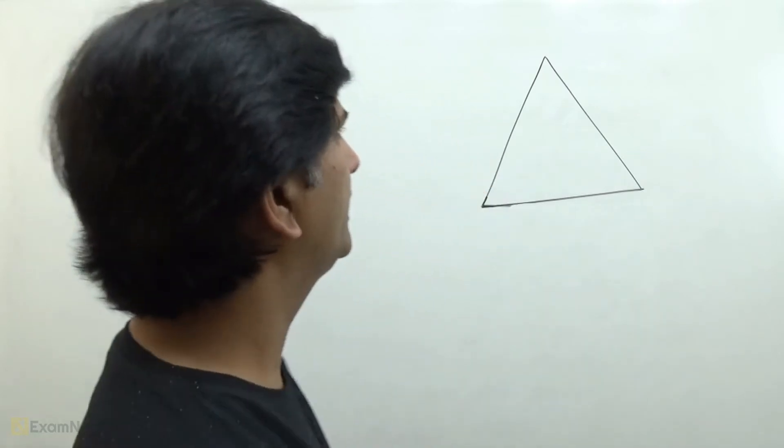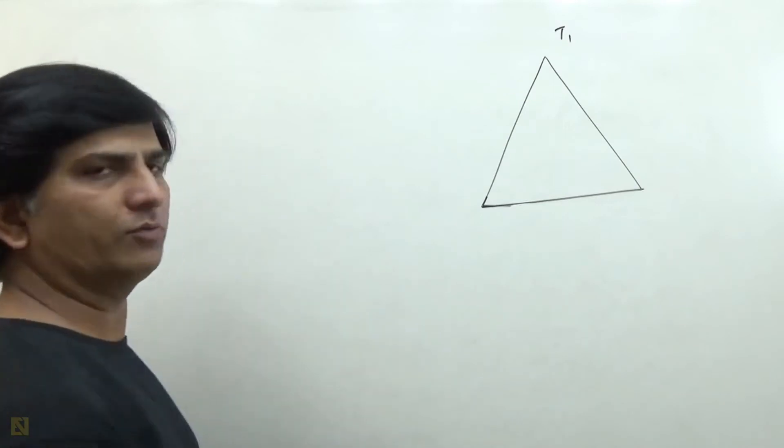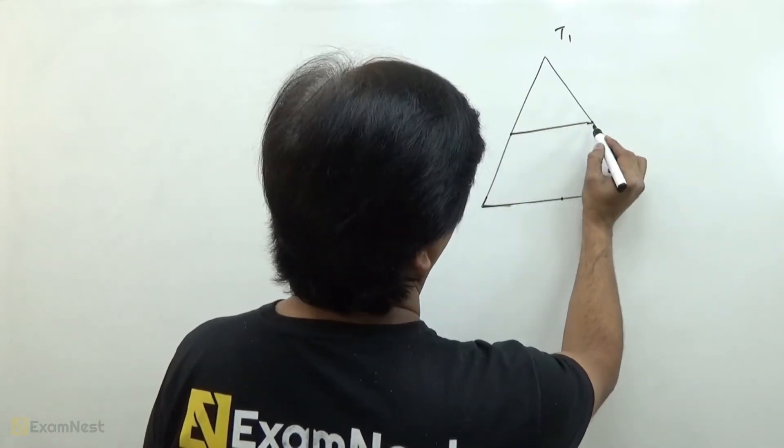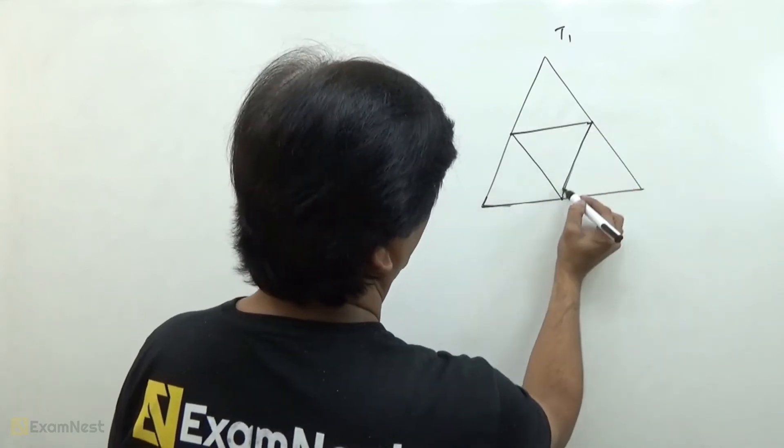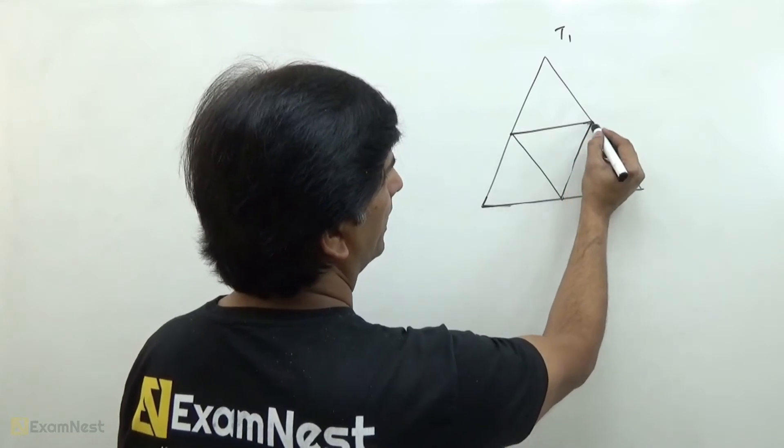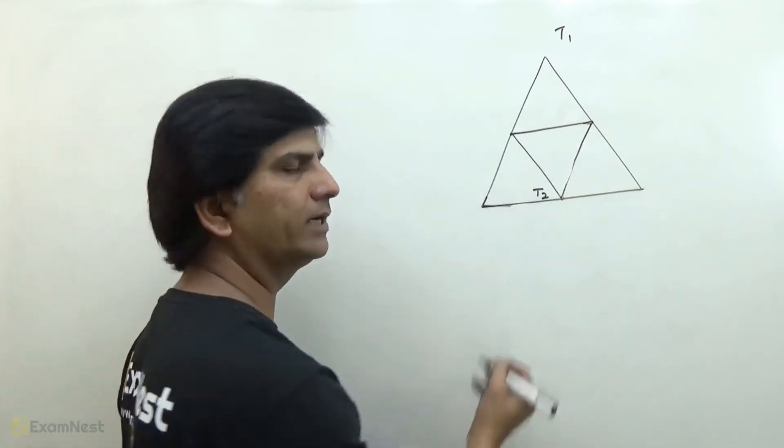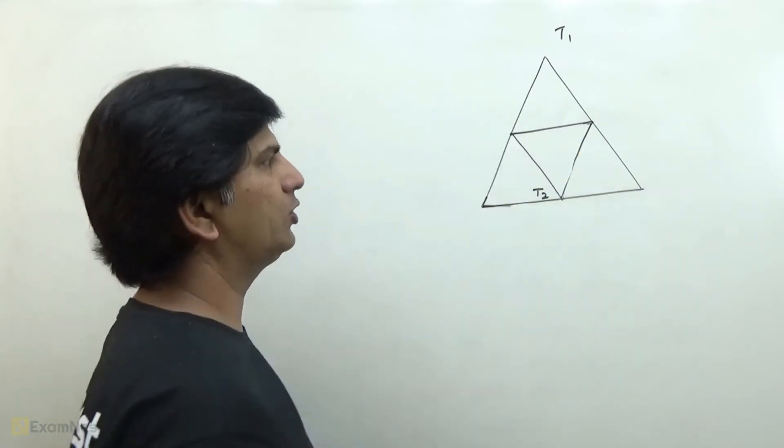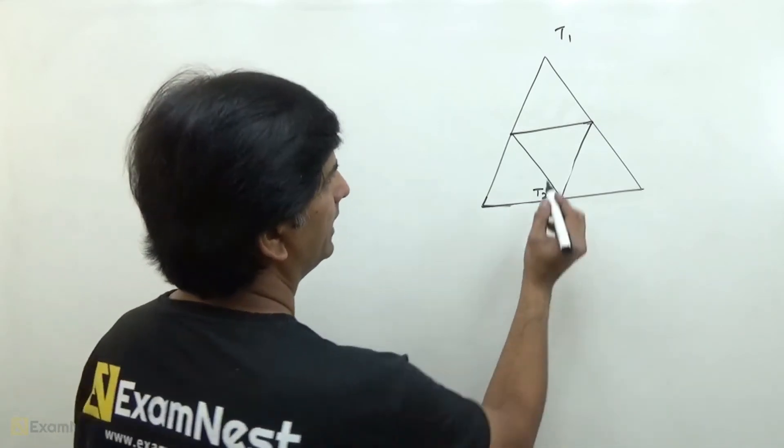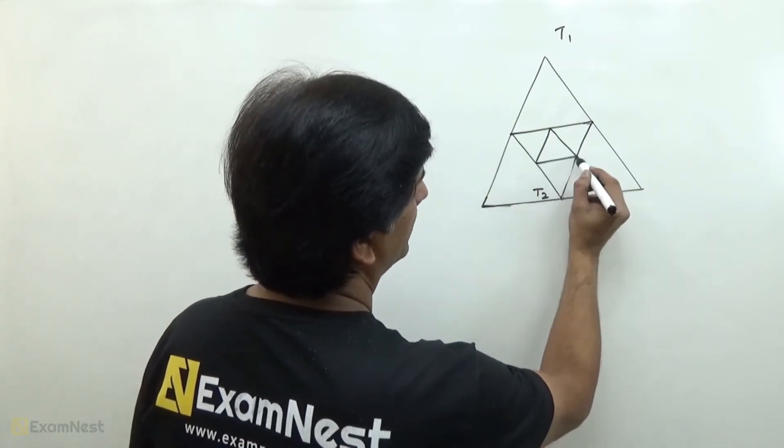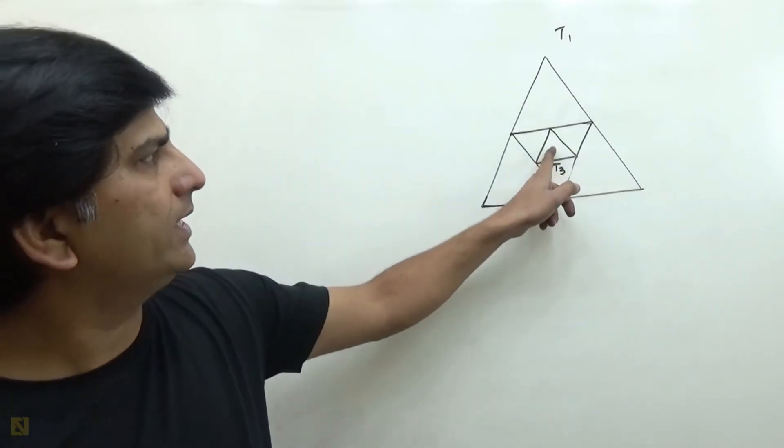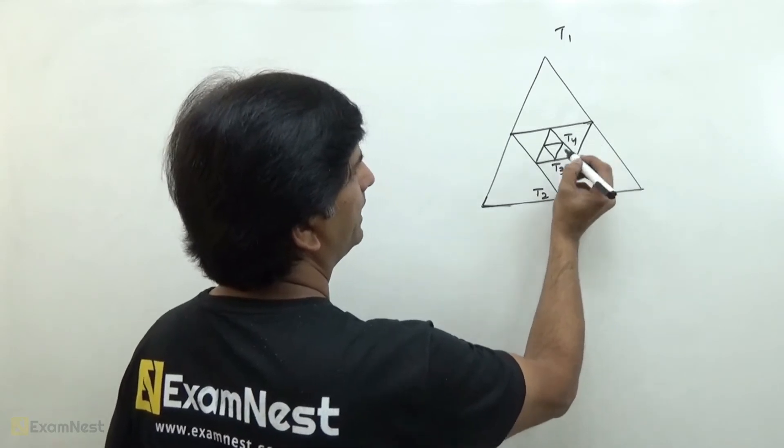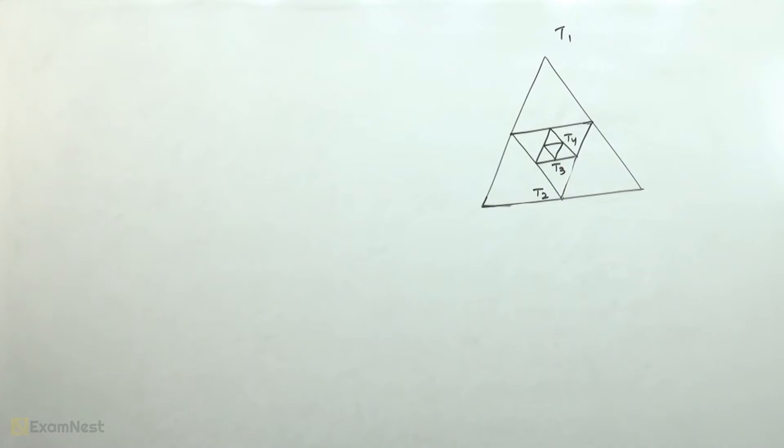The triangle T1 is equilateral. If we connect the midpoints of the sides, then we have another triangle. If we know the geometric properties, we know that this triangle is also an equilateral triangle. So triangle T2 is an equilateral triangle. If there are infinitely many triangles, then we have to find the sum of their areas.